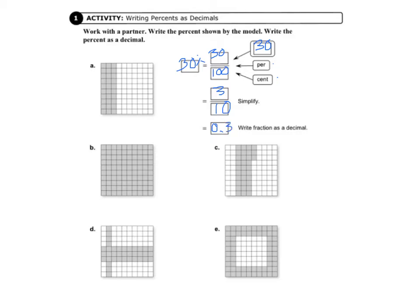And letter B, all of the squares are shaded in, so that's 100%. And that equals 1. So the whole thing is shaded in.